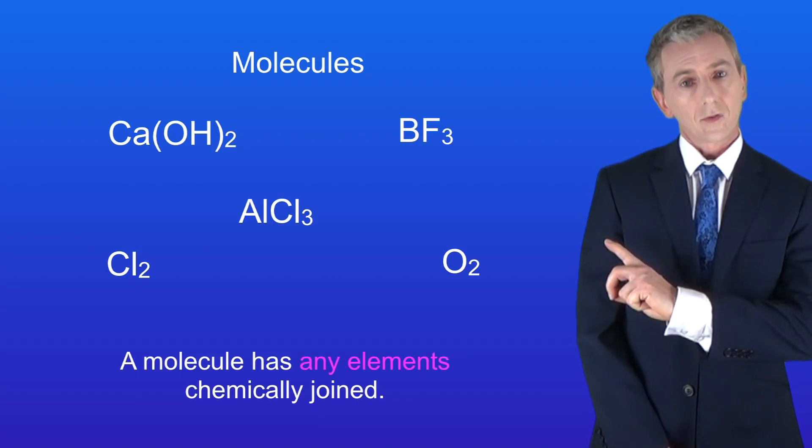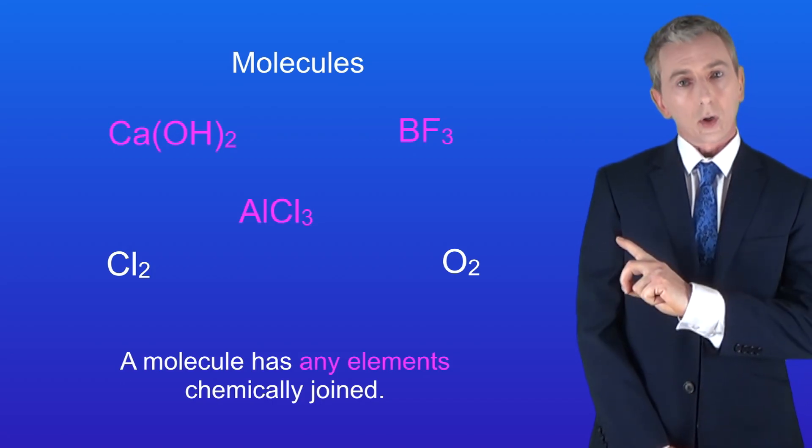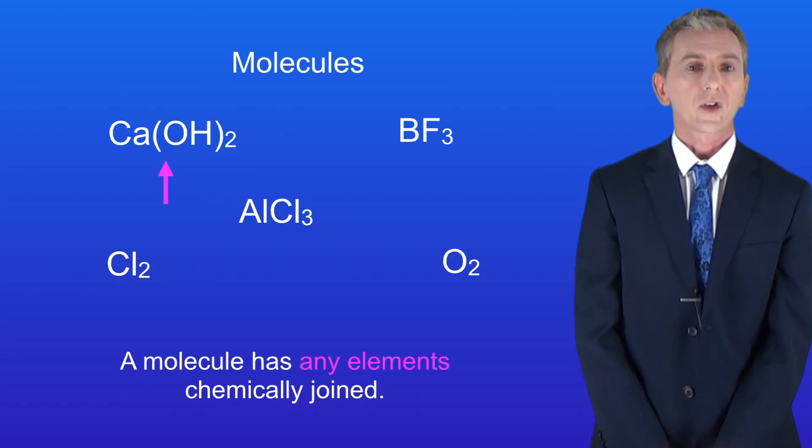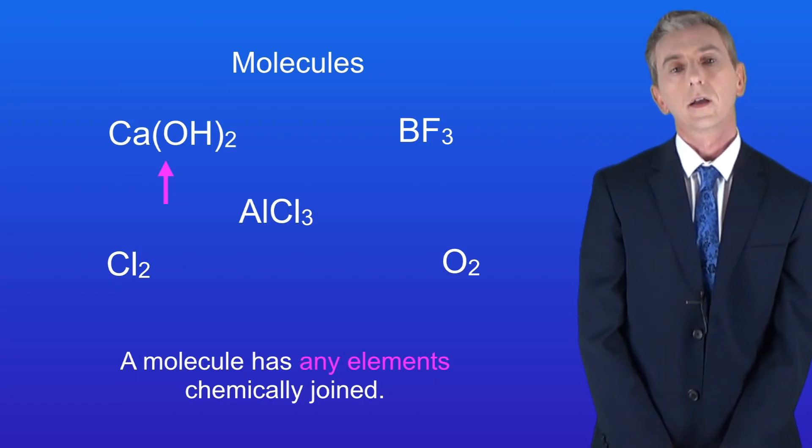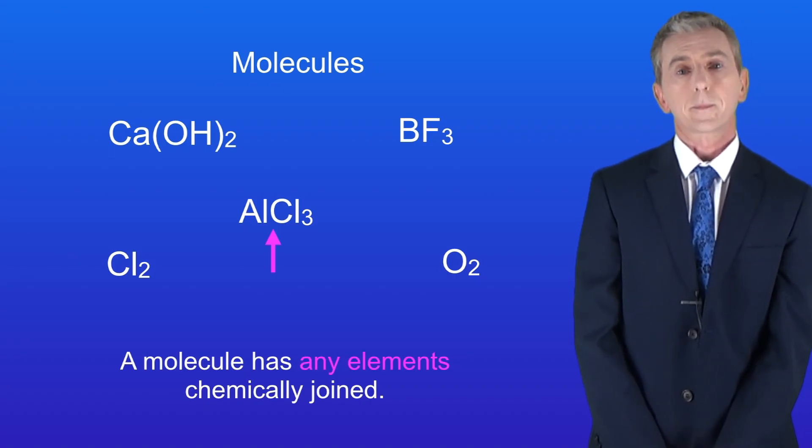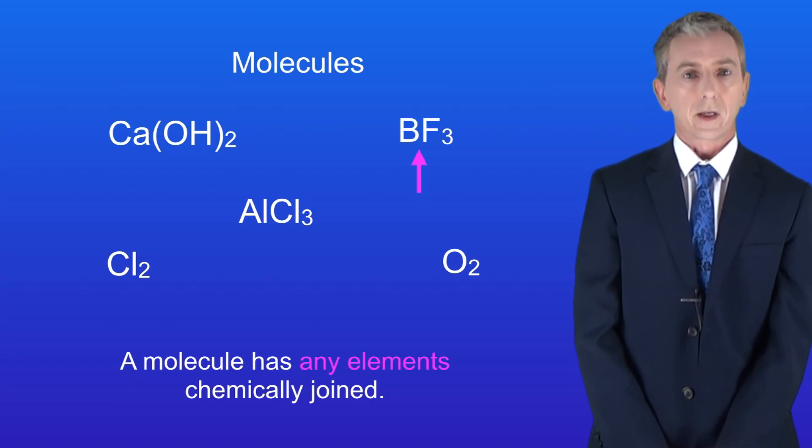So all of these are examples of molecules. However these molecules are also compounds because they contain different elements chemically combined. For example this compound calcium hydroxide contains calcium, oxygen and hydrogen. This compound aluminium chloride contains aluminium and chlorine and this compound boron trifluoride contains boron and fluorine.